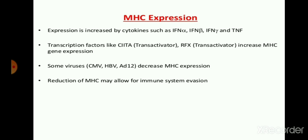Also some transcription factors increase the rate of expression of MHC molecules, such as a transactivator and RFX, which increase MHC gene expression. But some kinds of viruses such as CMV, HFV, and AD12 decrease MHC expression — that is, the recognition of antigen can be decreased by these viruses. Also, the reduction of MHC may allow immune system evasion.